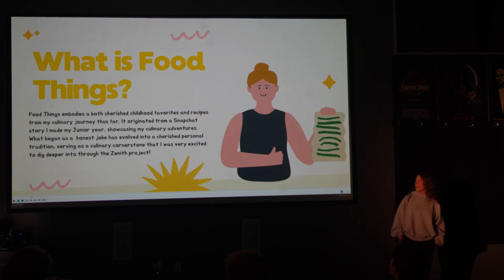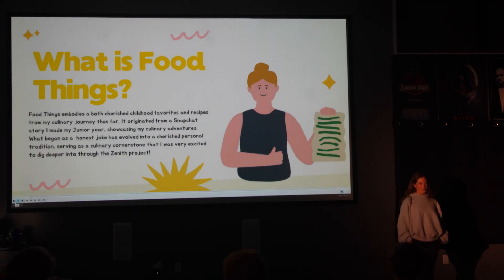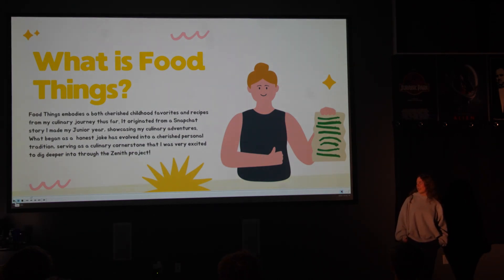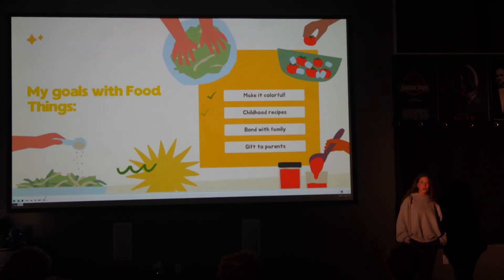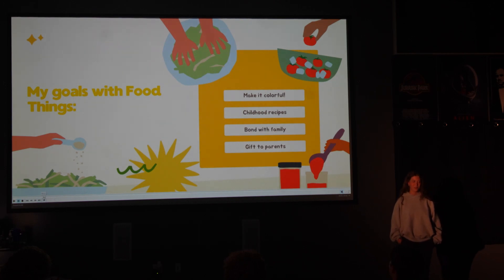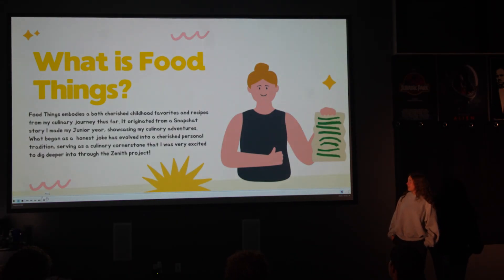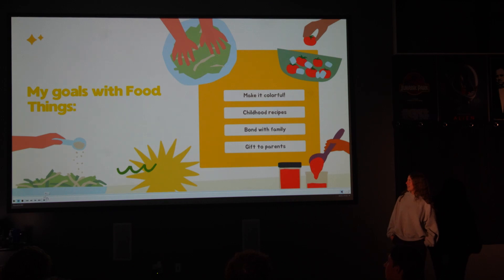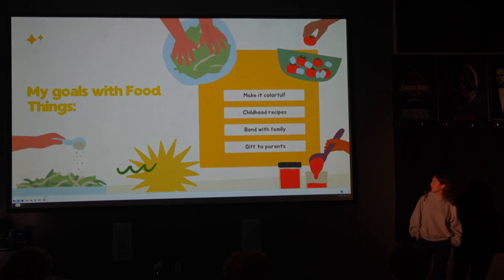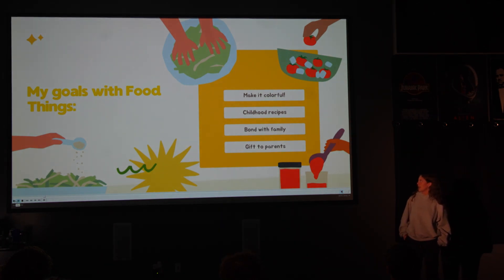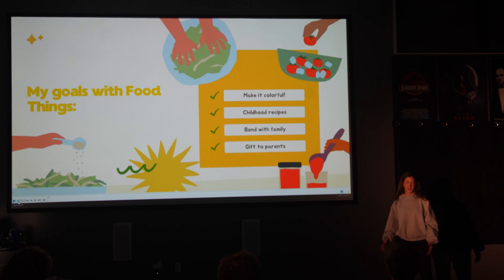Food Things is this Snapchat story that I started about a year ago, where I post all the food that I eat or make. It kind of started as a joke, but it's become something I really like and a lot of my friends know about it. My main goals were to make the book colorful, include childhood recipes, bond with my family, and be able to gift it to my parents at the end.